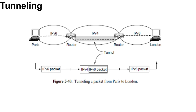But there is a different network in between. Here is an example: think of an international bank with an IP version 6 network in Paris and an IP version 6 network in London, with connectivity between the offices via the IP version 4 internet. The situation is shown in the slide — tunnelling a packet from Paris to London.